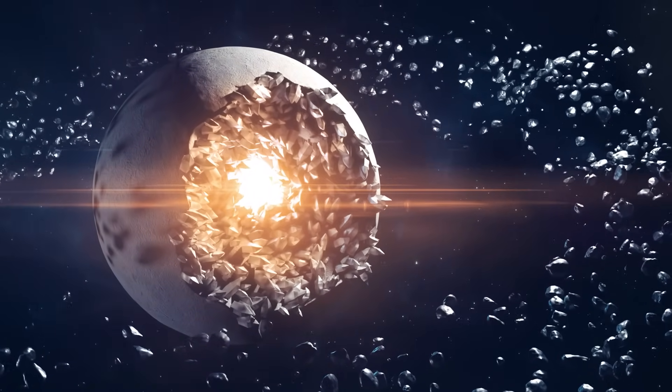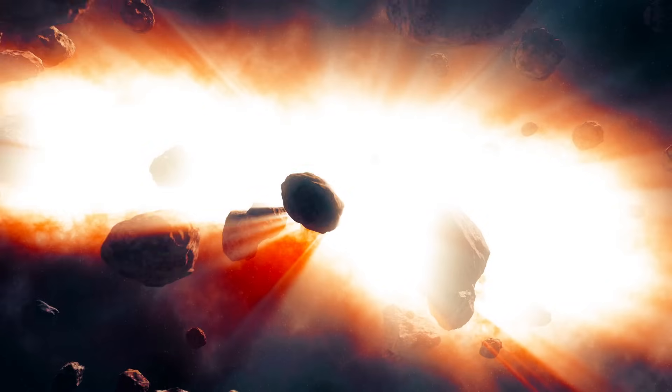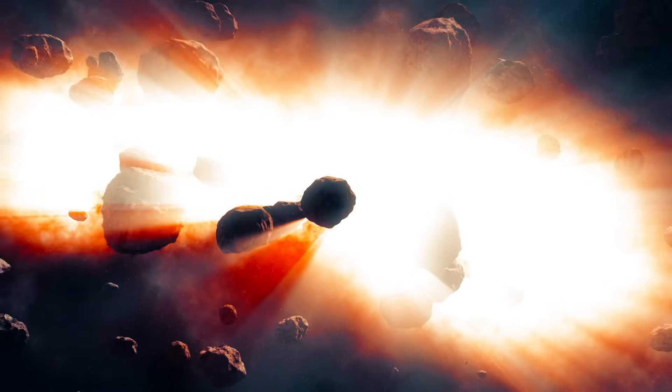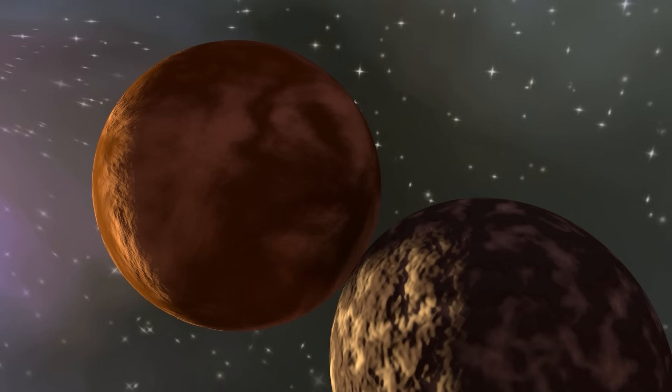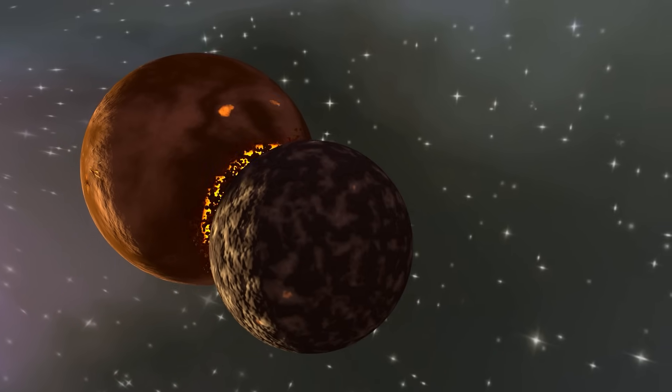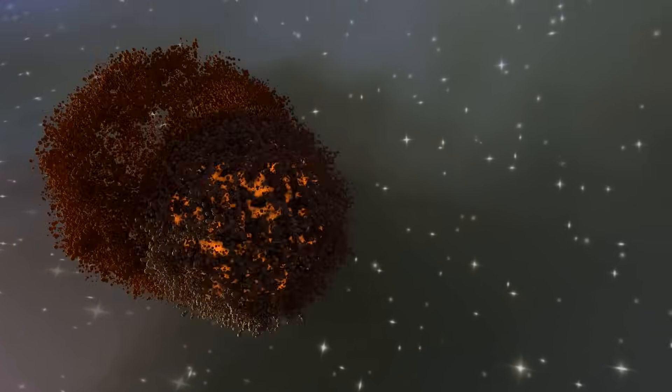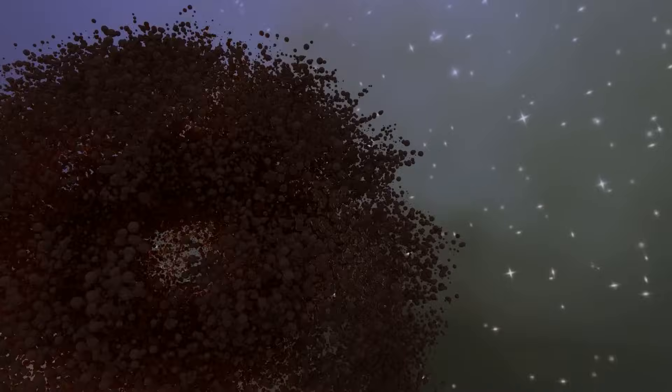The debris comprised of a combination of the iron-depleted rocky mantle expelled from Earth as well as the core of the impactor. Computers have been able to accurately recreate the scenario of material from the Earth's crust forming without affecting the planet's core.